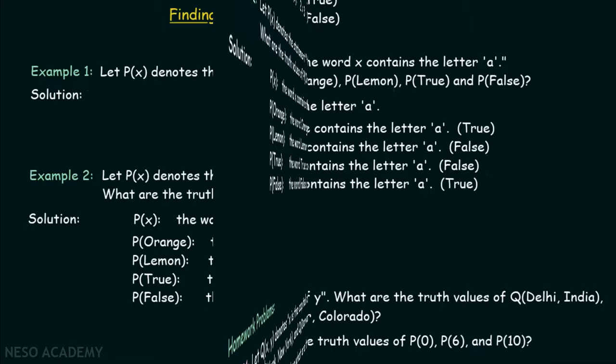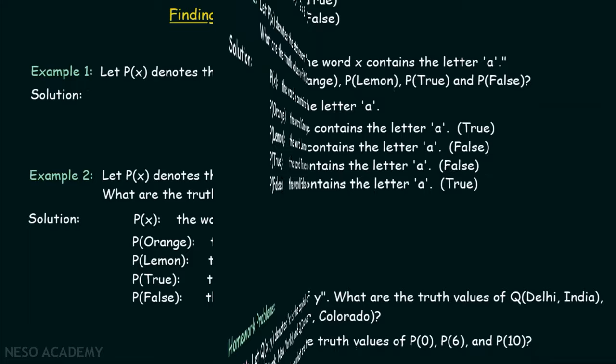After understanding how to find the truth values of predicates, here is one homework problem for you. Let Q(x, y) denote 'x is the capital of y'. What are the truth values of Q(Delhi, India), Q(New York, New York), and Q(Denver, Colorado)? Question 2: If P(x) denotes x < 4, then what are the truth values of P(0), P(6), and P(10)? You can always post your answers in the comment section below.